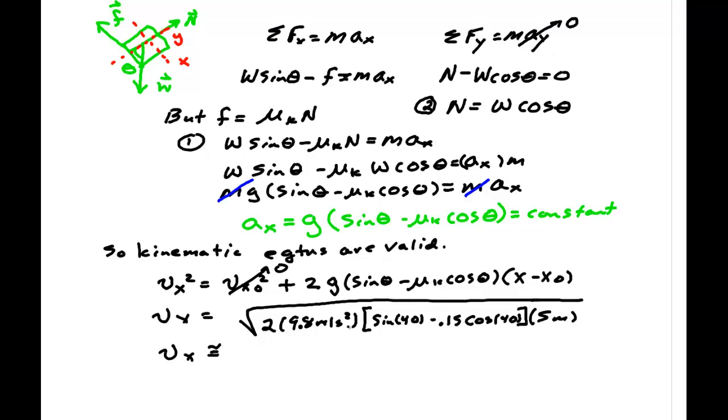7.19. So assuming that I punched my calculator correctly, I get 7.19 meters per second. And that was the question asked.